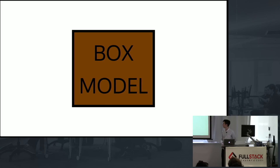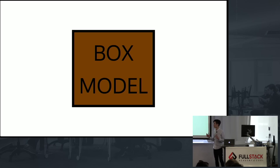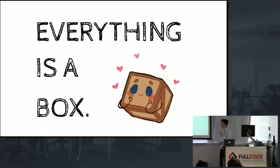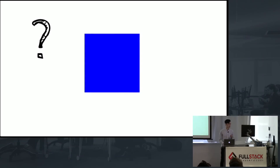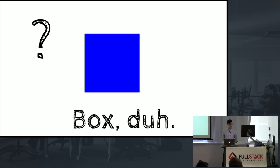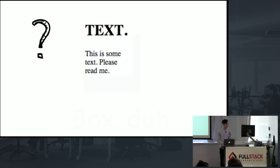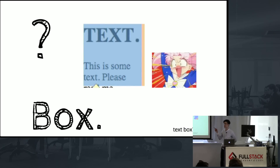The first thing I'm going to talk about is the box model. When the DOM renders all the elements on your page, it basically renders them as boxes. The first rule with the box model is that everything is a box. What is this? If you said it's a box, you'd be correct. But what about this? It appears to be some text — no, it's a box with some text in it. That's probably why they call it a text box.